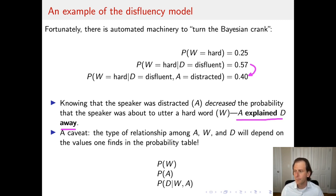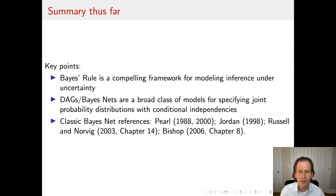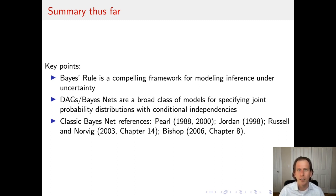To summarize: we looked at a framework for modeling inference under uncertainty. We already had Bayes rule for that, and we looked at a broad class of models — particularly directed acyclic graphs — for specifying joint probability distributions with conditional independencies. There are classic Bayes net references in the appendix. Subsequently, we'll look at a case study of applying Bayes nets to build a simple model of speech perception, where the conditional independence structure will play a very important role in building a compelling cognitive model of an interesting empirical phenomenon in human speech perception.